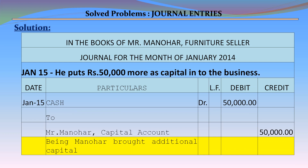January 15 – He puts Rs. 50,000 more as capital into the business. Journal entry: Cash Account debit Rs. 50,000 to Mr. Manohar Capital Account credit Rs. 50,000, being Manohar bringing additional capital.